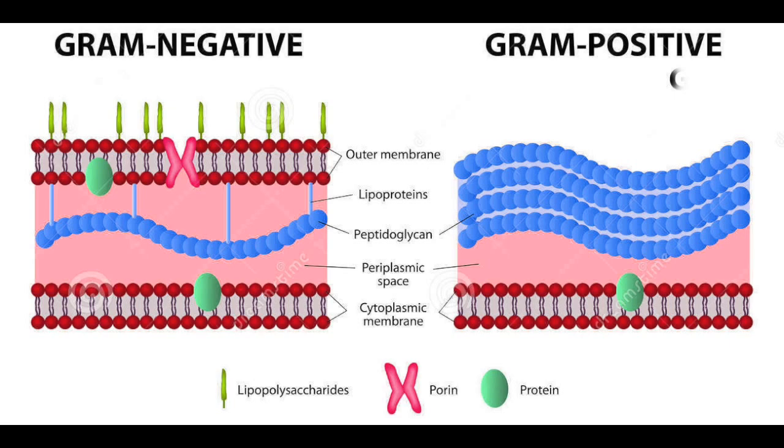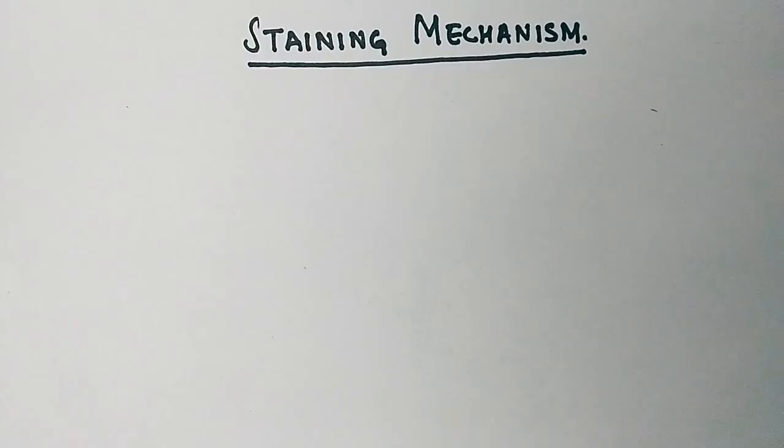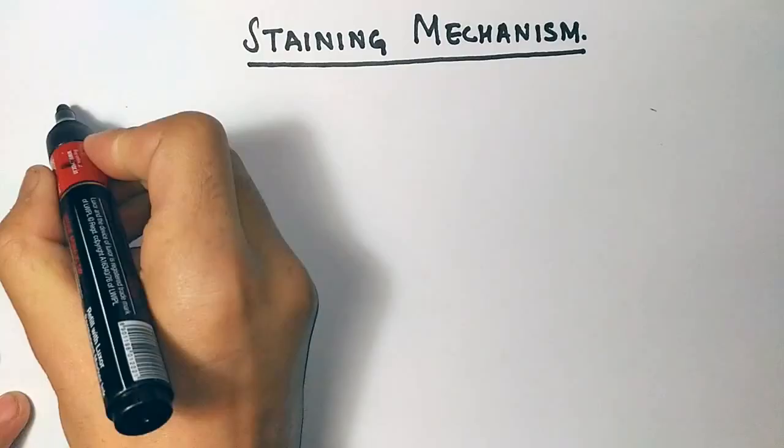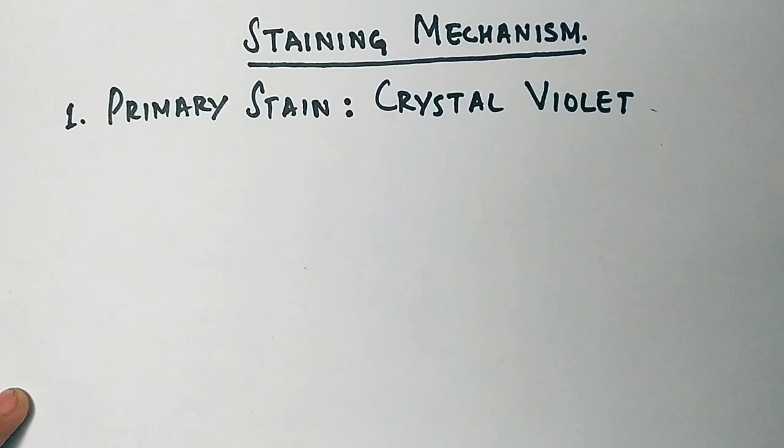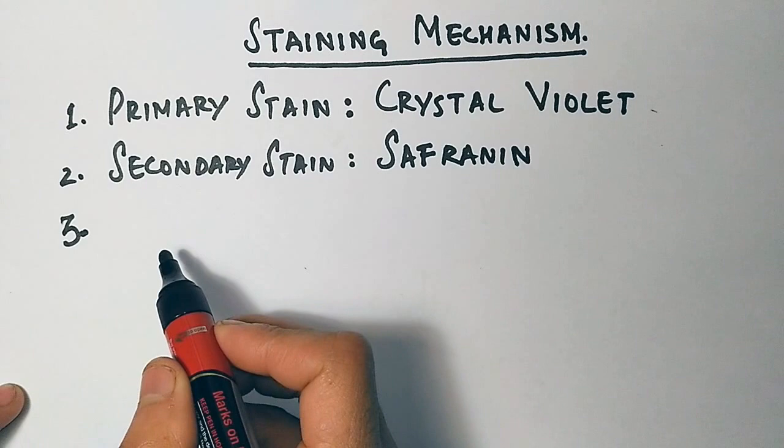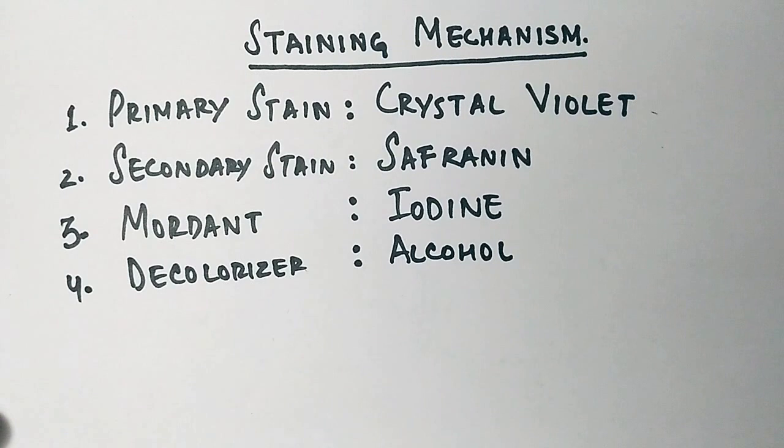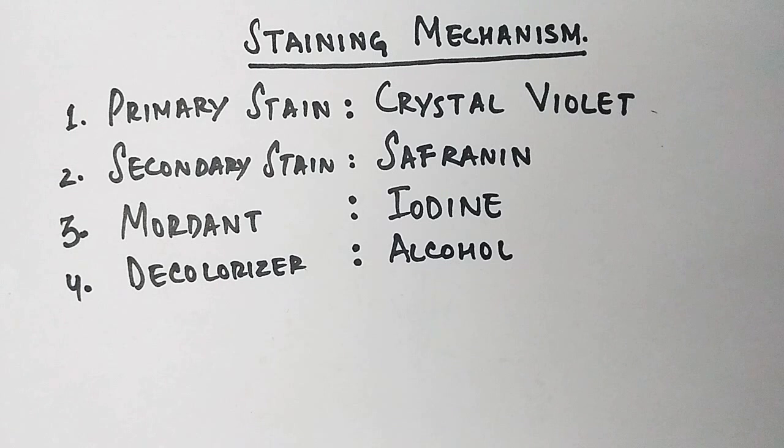Now let's jump towards the staining mechanism of this process. We use four different types of chemicals here. First one is primary stain, that's crystal violet. Second is secondary stain, that's safranin. Third one is mordant, which is iodine. Fourth one is decolorizer, which is alcohol here. And this iodine which is used here as mordant fixes the primary dye in case of gram staining technique.